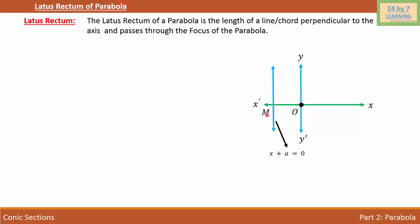Now let's draw the parabola — we get a curve something like this. Let's consider the focus of the parabola, and let the coordinates of the focus be F(a, 0). Now we need to draw a line perpendicular to the axis that passes through the focus. We get this line, and let the endpoints of this chord be called P and Q.